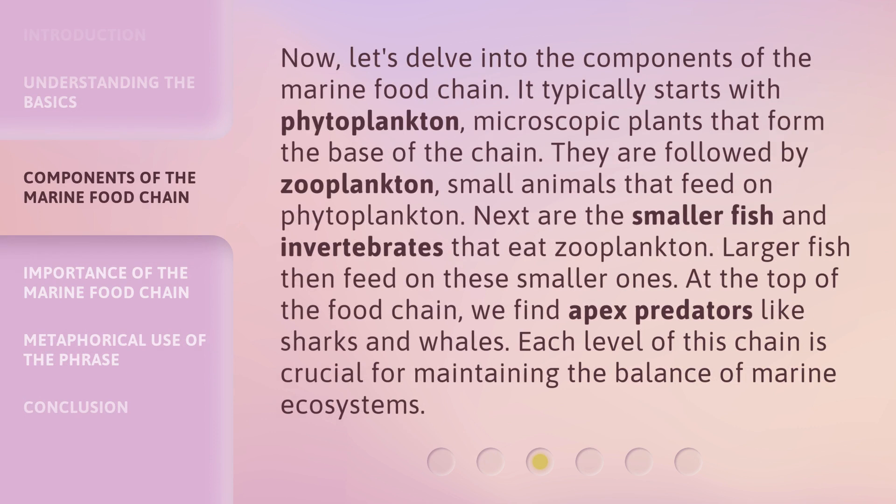Now, let's delve into the components of the marine food chain. It typically starts with phytoplankton, microscopic plants that form the base of the chain. They are followed by zooplankton, small animals that feed on phytoplankton. Next are the smaller fish and invertebrates that eat zooplankton. Larger fish then feed on these smaller ones. At the top of the food chain, we find apex predators like sharks and whales. Each level of this chain is crucial for maintaining the balance of marine ecosystems.